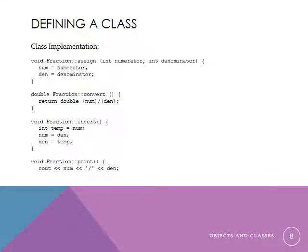And here's the code for those methods that we saw before in the class definition. We've got the assign function. It has two parameters. They are indeed value parameters. And all they do is take in values and assign those values to the private data of the object. We've got the convert function, which returns the expression, the result of the expression numerator divided by denominator. That's what we thought it would be. We've got the invert function, which is just a swap. It swaps numerator and denominator. And then we've got the print function that sends things to c out.